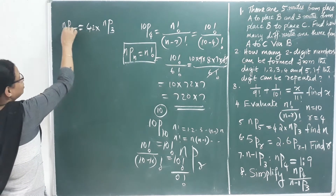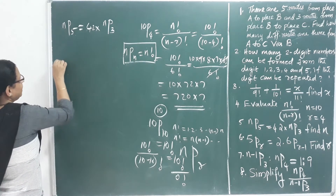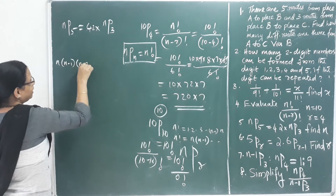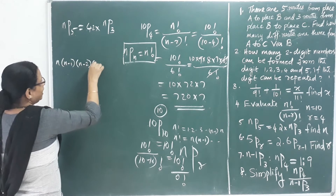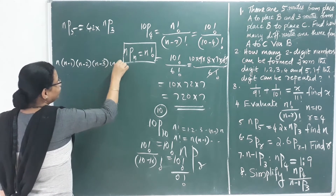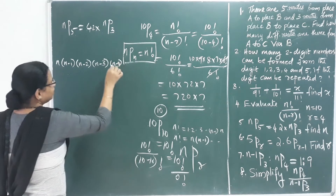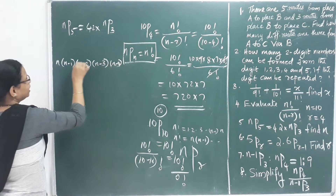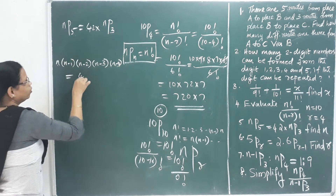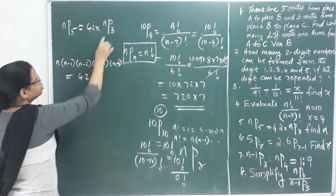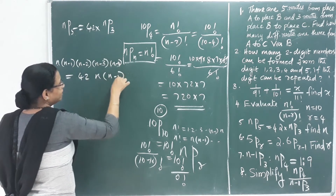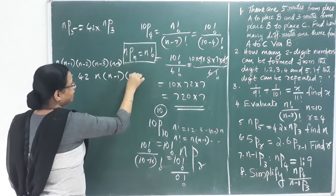NP5 expands as n × (n−1) × (n−2) × (n−3) × (n−4) — that is 5 terms. And 42 × NP3 expands as 42 × n × (n−1) × (n−2) — that is 3 terms.